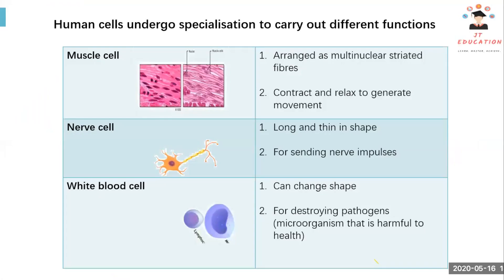We are now looking at the cell in the human body. There are various types of cells in a multicellular organism. Human cells are very different in size, shape, and arrangement. The structure of the cell has a very close relationship to its function, and each type of cell is specialized to carry out a specific function in our body.